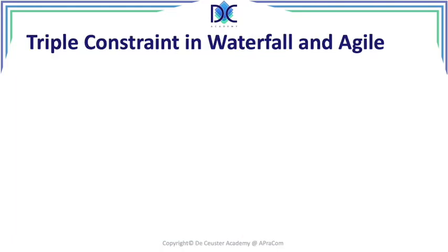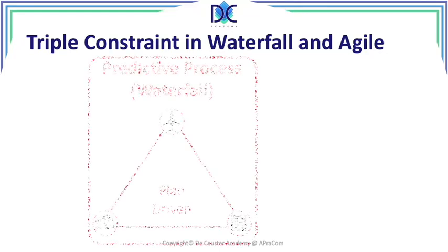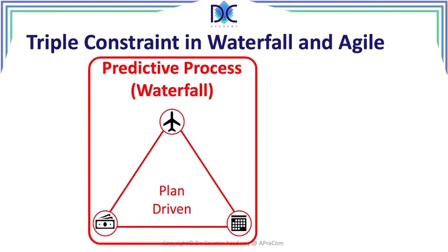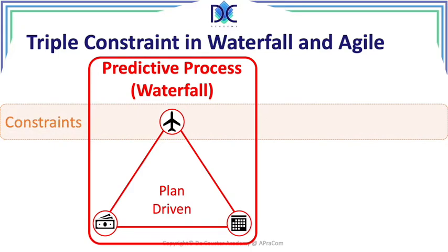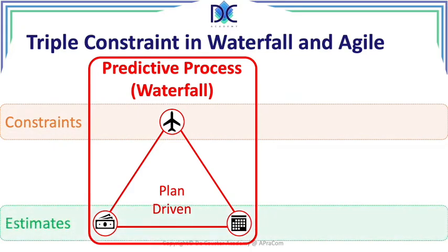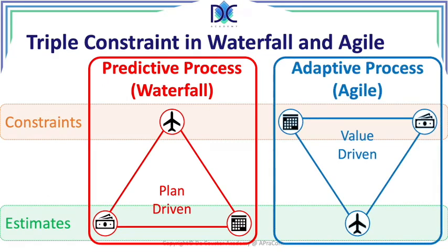When we look at the triple constraint in waterfall and Agile: waterfall is a plan-driven approach where the constraint is scope and we estimate the time and cost. Agile is a value-driven approach where the constraints are time and cost, and the estimate is about the scope that we are going to do. That's one of the important differences when comparing the triple constraint between waterfall and Agile.